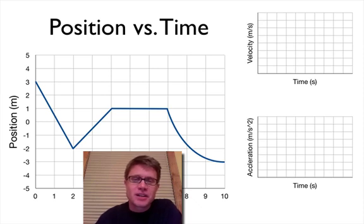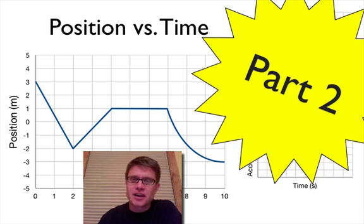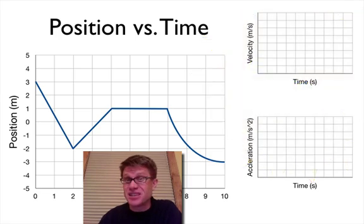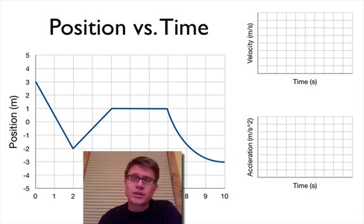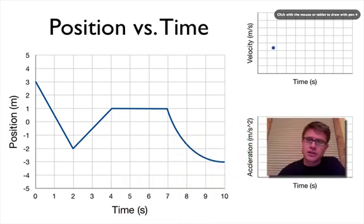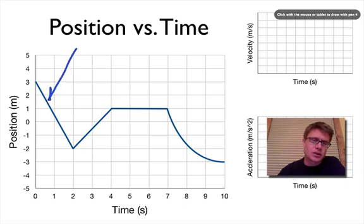Hi, it's Mr. Andersen. Today I'm going to do position versus time, part 2. If you haven't seen part 1, make sure you go back and watch it — unless this seems easy, and then just sit back and relax. In part 1, I showed you how to interpret a position versus time graph and eventually make a velocity versus time graph. The slope of the line always tells you the velocity.